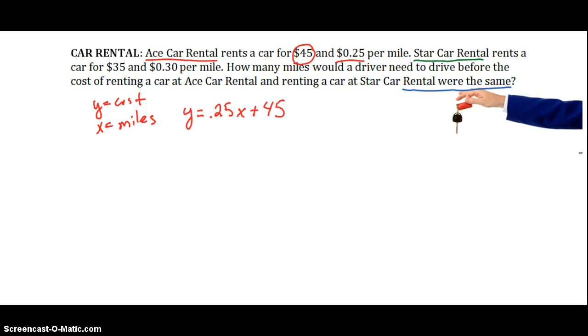We're going to set up the same type of equation for Star Car Rental. Star Car Rental, the total cost, we don't know yet. How much do we have to pay per mile? $0.30. So 0.30 times the number of miles we go, plus the $35 to rent the car. All right, so there we've got our two equations.